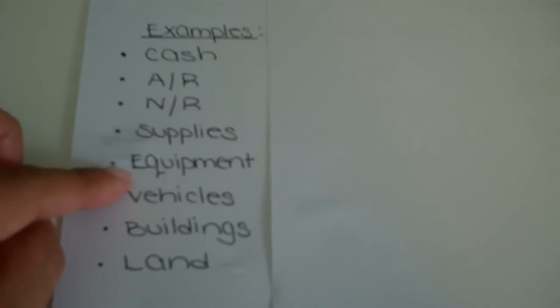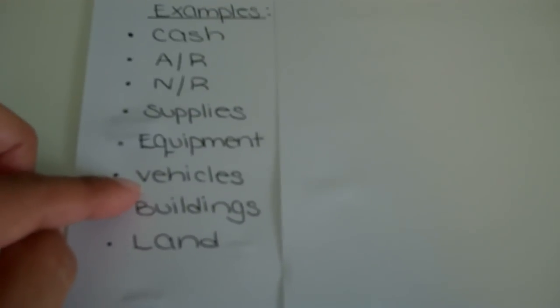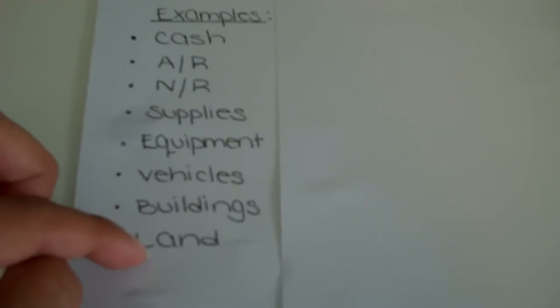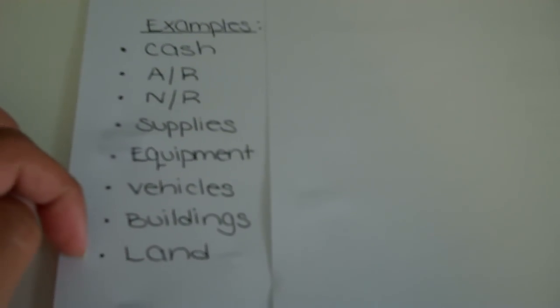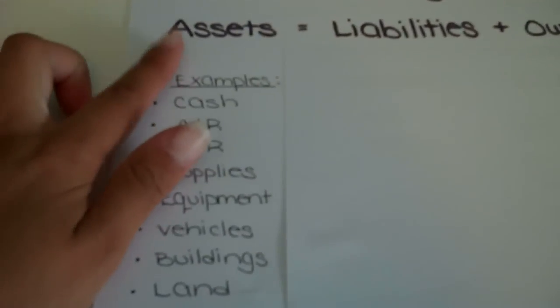A company's supplies, equipment, if the company has any vehicles, buildings, or land. All those are examples of a company's assets.